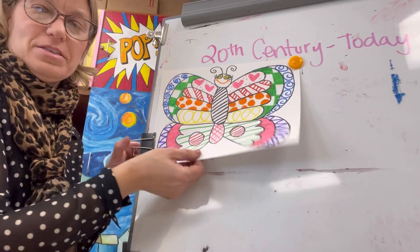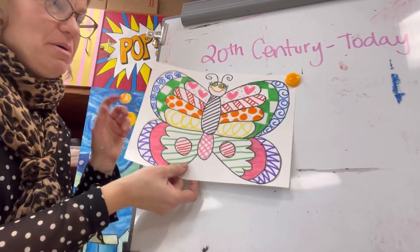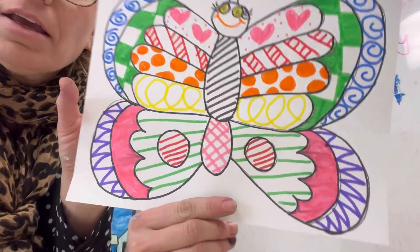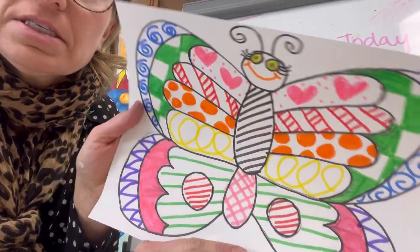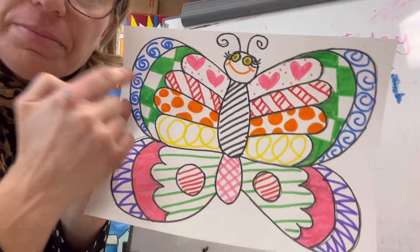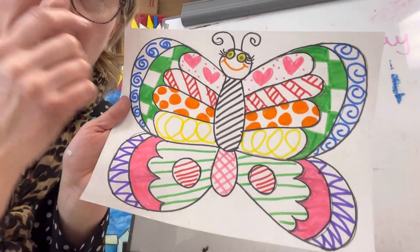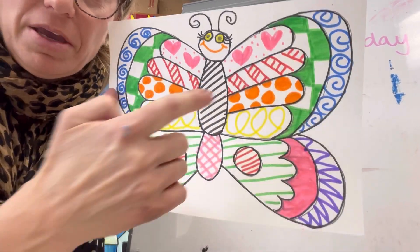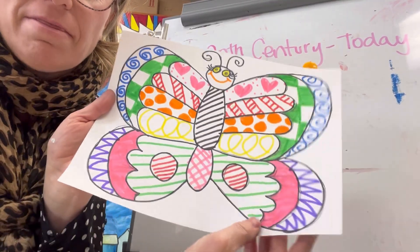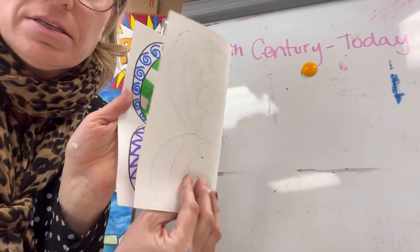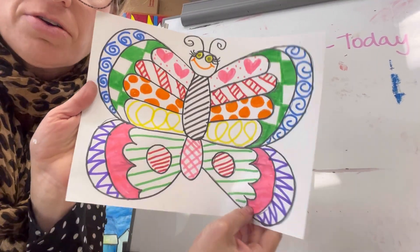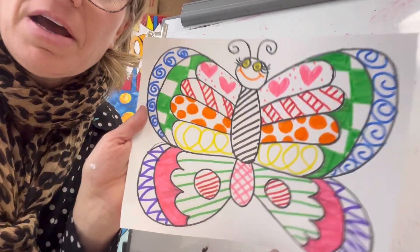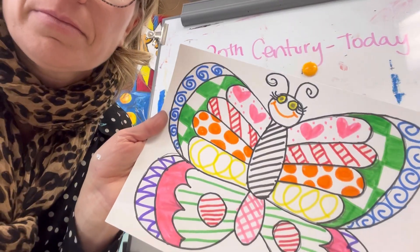Here is my finished butterfly. You want to make sure that each side you create is the same — so if you made pink hearts on this side, pink hearts on this side too. Remember, that word is symmetrical. Look, she can fly! Enjoy making the butterfly.